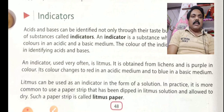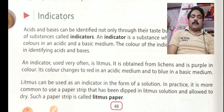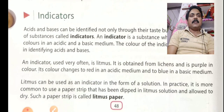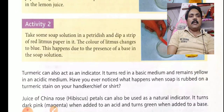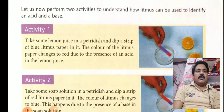In practice, it is more common to use a paper strip that has been dipped in litmus solution and allowed to dry. Such a paper strip is called litmus paper, and it comes in strip form. Let us now perform two activities to understand how litmus can be used to identify an acid and a base.